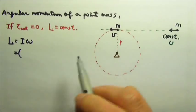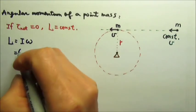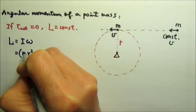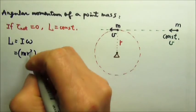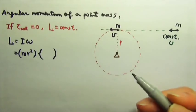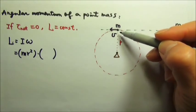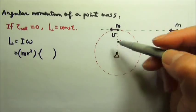The rotational inertia of a point mass is MR squared, if the R is this distance. And what is the omega? Omega would be V over R.